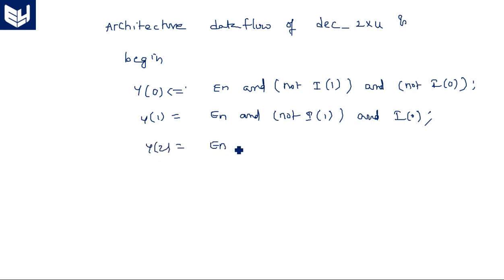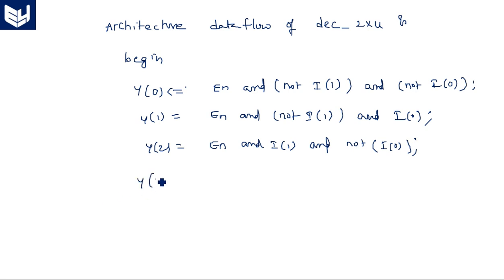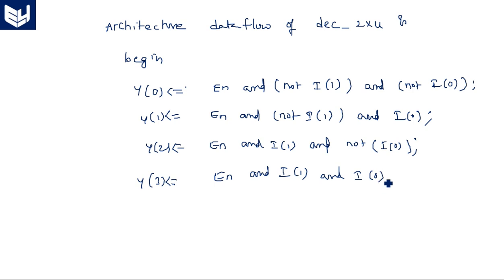Continuing: y(2) <= enable and i(1) and (not i(0)); y(3) <= enable and i(1) and i(0). Note that '<=' in VHDL is the signal assignment operator. This AND operation is applied among the three variables: enable, i(1), and i(0). This completes the dataflow model code based on Boolean expressions.